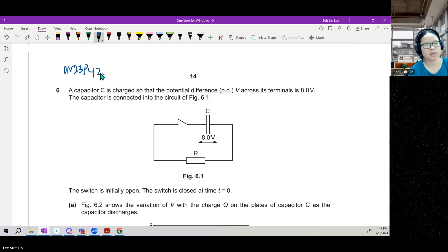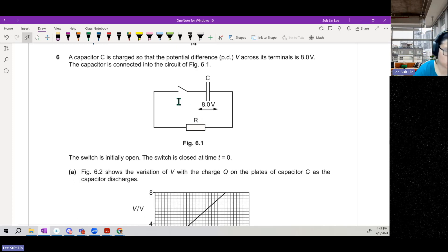Okay, so a capacitor is charged so that the potential difference across the terminals is 8 volts. The capacitor is connected into the circuit of Figure 6.1. The switch was initially open. The switch is closed at time t equal to zero. So I charge the capacitor to 8 volts. The positive charge is here, but it doesn't really matter. So it has some charge here.